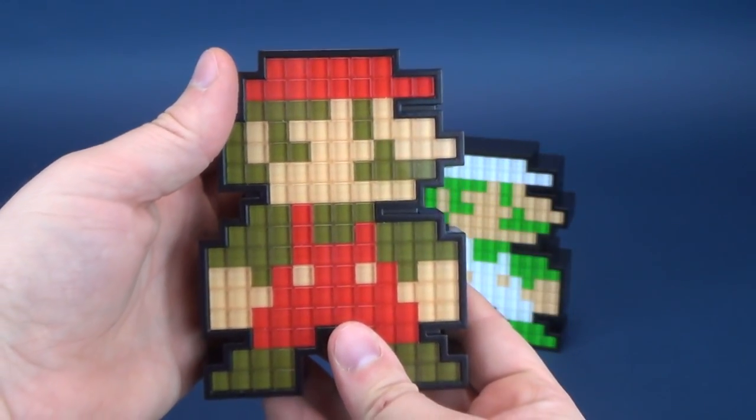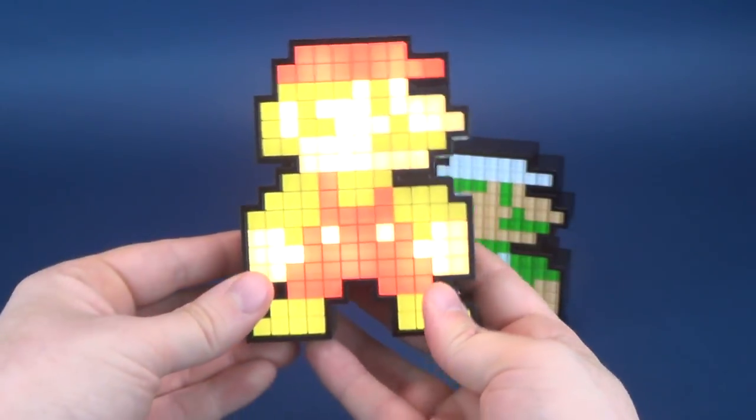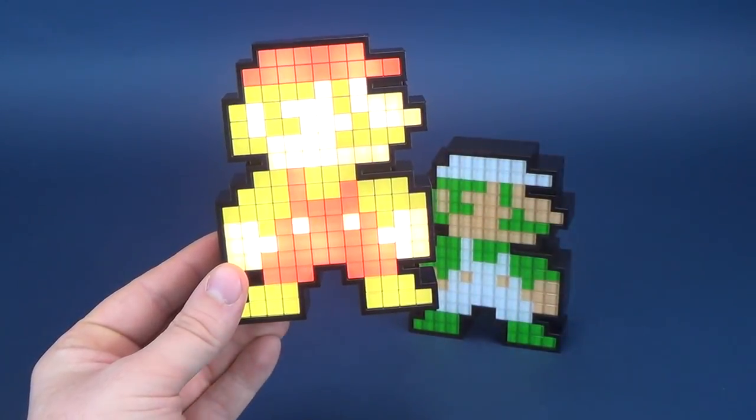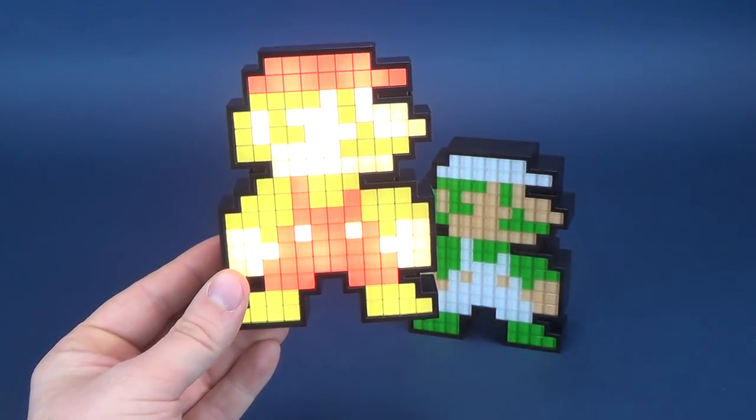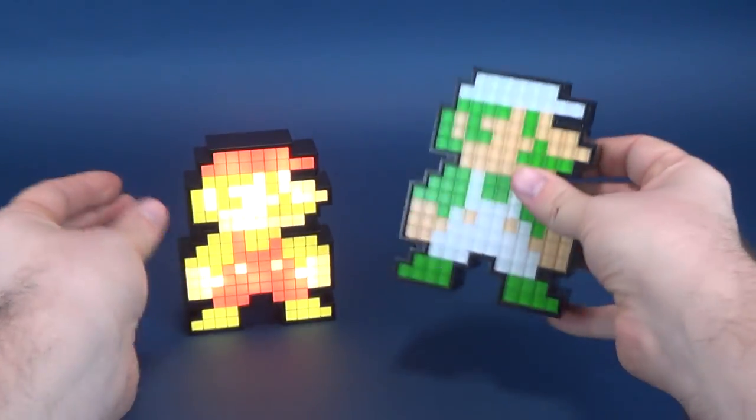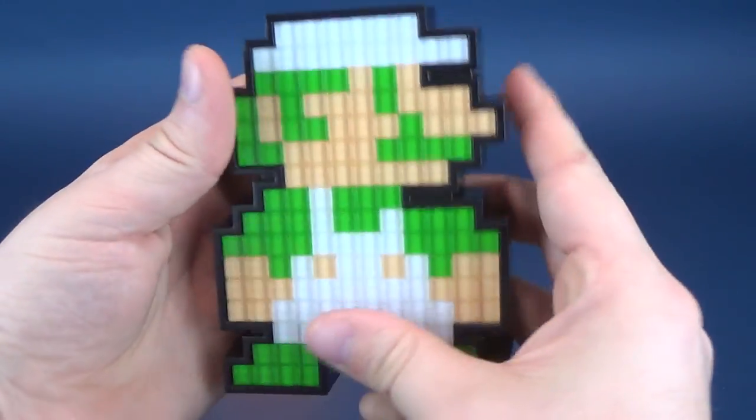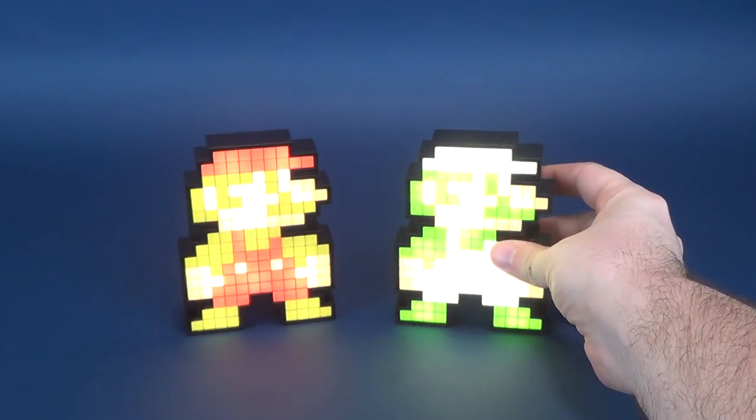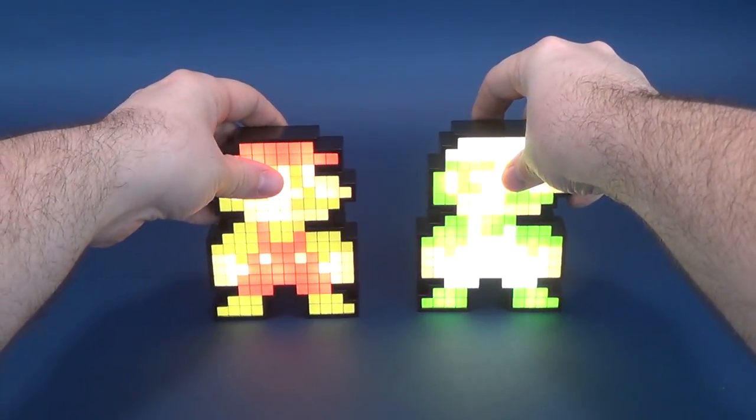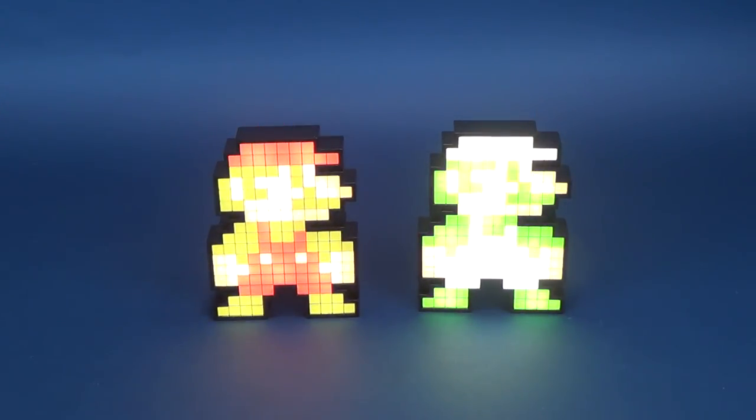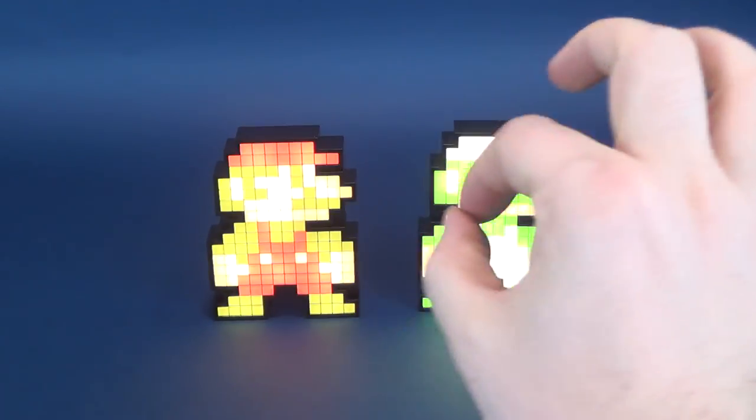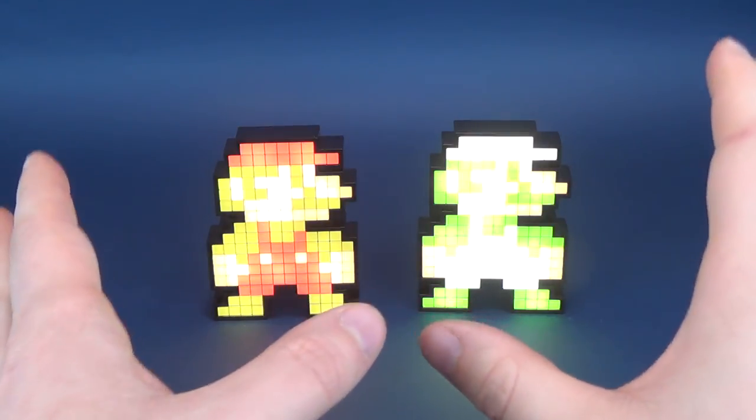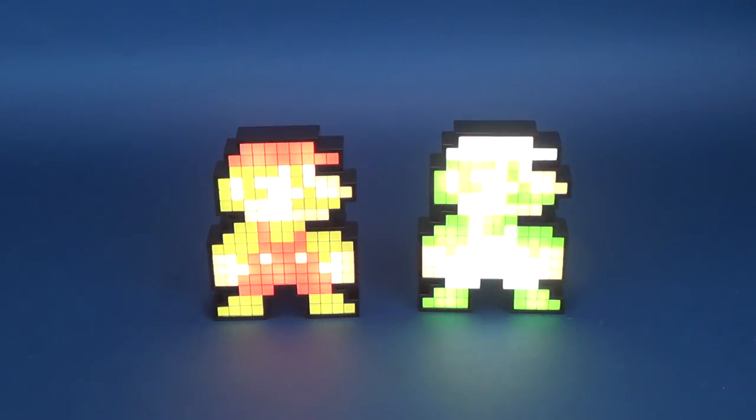This is what it looks like without the light. Switching it over, this is what it looks like with the light. The light somewhat distorts the coloring of Mario, makes him look a lot brighter than what he does in the game. We'll do the exact same thing with Luigi, and you can see how quickly this whole area gets illuminated. I guess they look better from a distance, because the light is so bright coming through those individual tilings of color, the brightness definitely does throw the coloring slightly off.